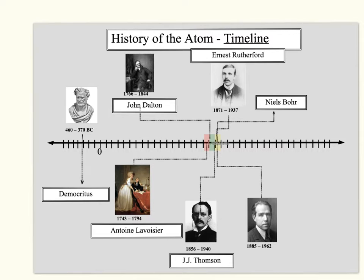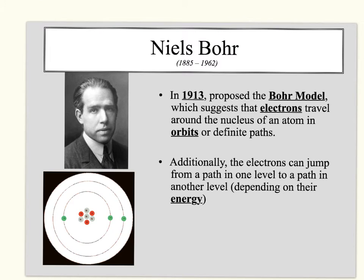We believed Ernest Rutherford's model for quite a while until Niels Bohr came along and changed our way of thinking. In 1913, Bohr proposed the Bohr model, which suggests that electrons travel around the nucleus in definite orbits or paths. Additionally, electrons can jump from one energy level to another depending on their energy. We know this as the planetary model, because it's like the sun at the center with planets orbiting around it.